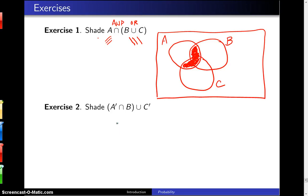So the problem here is to shade A complement intersect B union C complement on a Venn diagram. We start as we did before by drawing the Venn diagram.